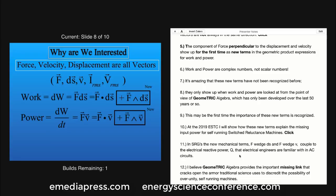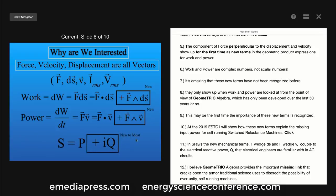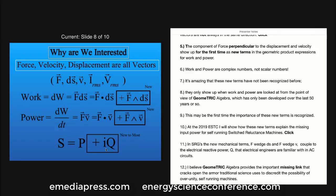At the 2019 Energy Science and Technology Conference, I will show how these new terms explain the missing input power for self-running switch reluctance machines. In switch reluctance generators, the new mechanical terms F wedge dS and F wedge V couple to the electrical reactive power Q that electrical engineers are familiar with in AC circuits. I believe Geometric Algebra provides the important link that cracks open the armor traditional science uses to discredit the possibility of over-unity self-running machines.